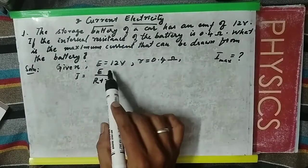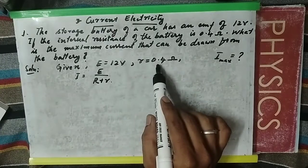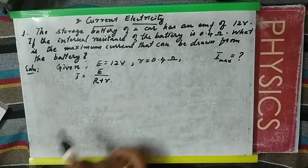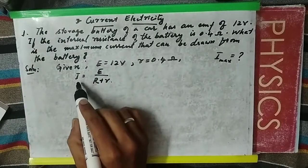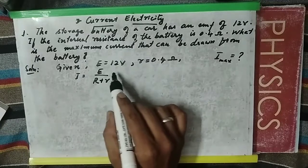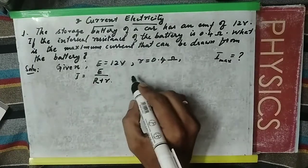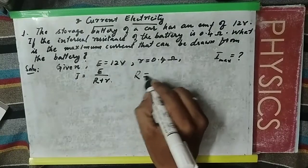Given here: EMF equals 12 volts and internal resistance is 0.4 ohms. The problem is asking you to calculate the maximum current. To calculate the current, we have the formula I = E/(R+r). In this case, you need to calculate maximum current, for which the load resistance R will be zero.